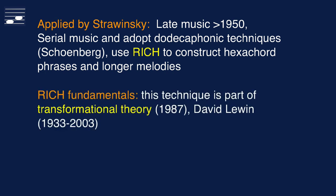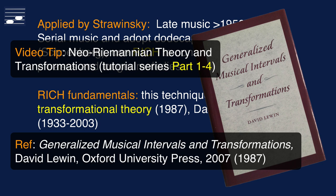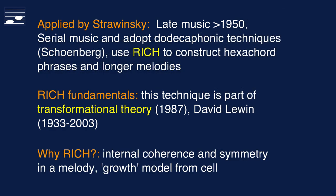In the book there also is reference to the RICH technique in David Lewin's book on generalized transformational theory. This book keeps coming up in my recent music studies, as may be clear to those of you who watched the series on Neo-Riemannian theory and its use in film music. With an RI chain one obtains inner coherence and symmetry in a melody. It is a type of growth model from a basic cell.